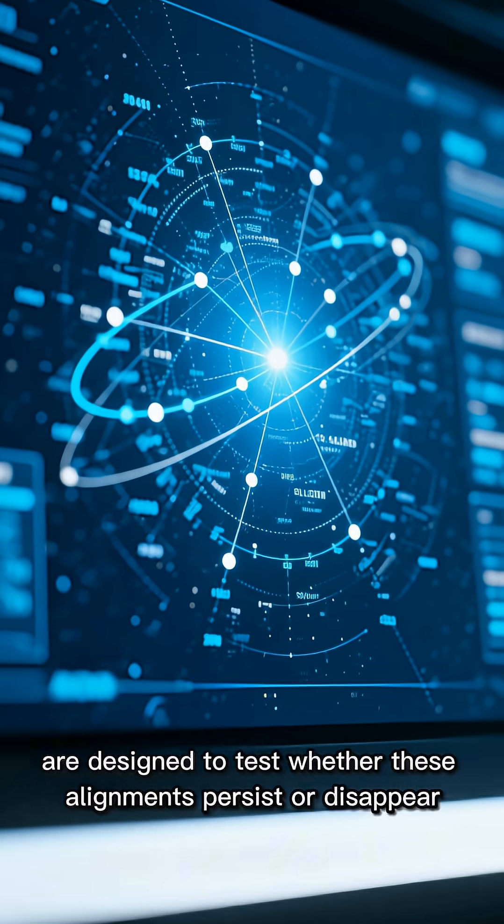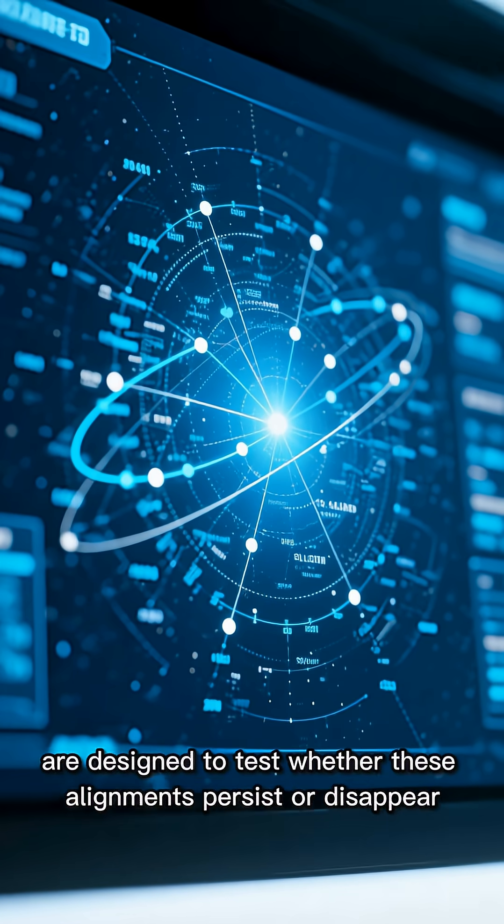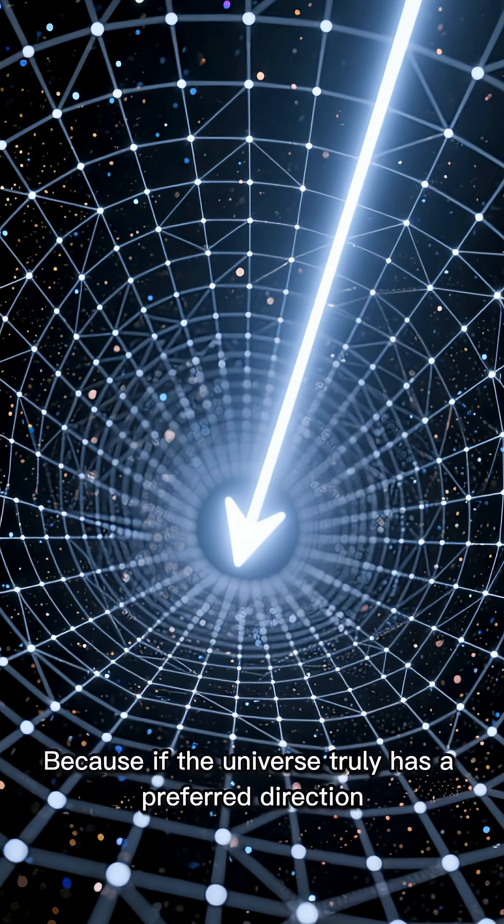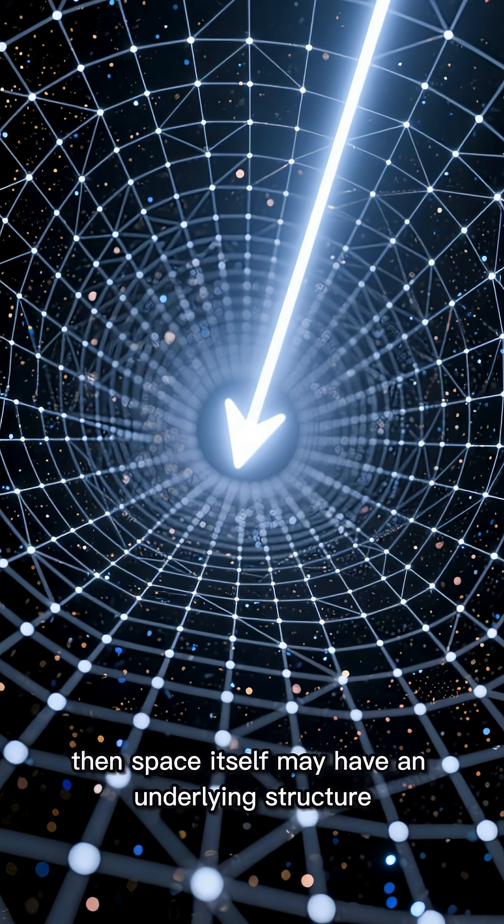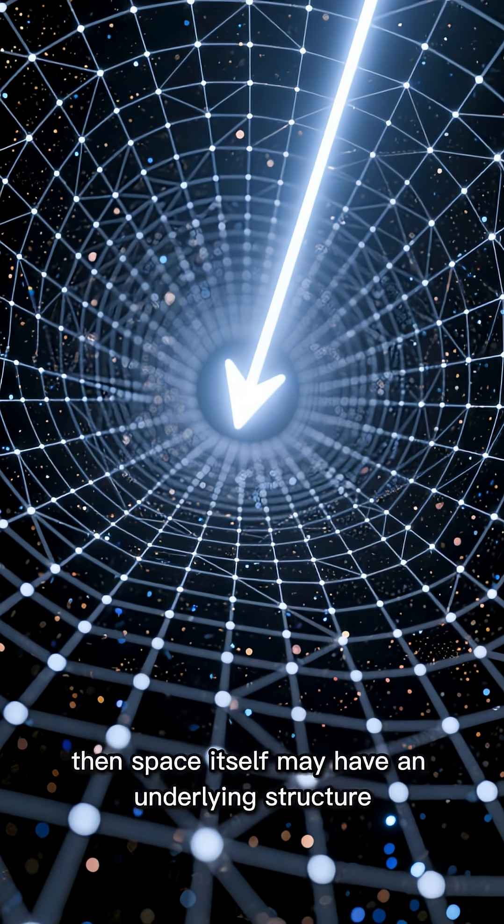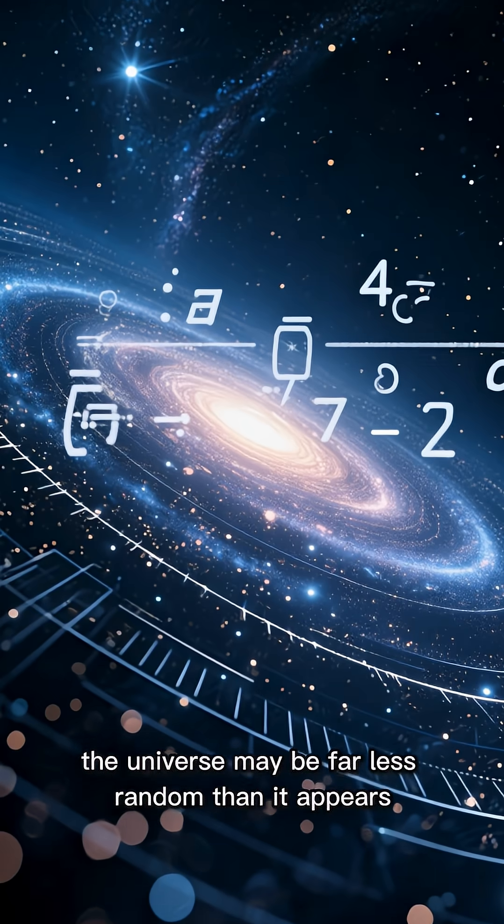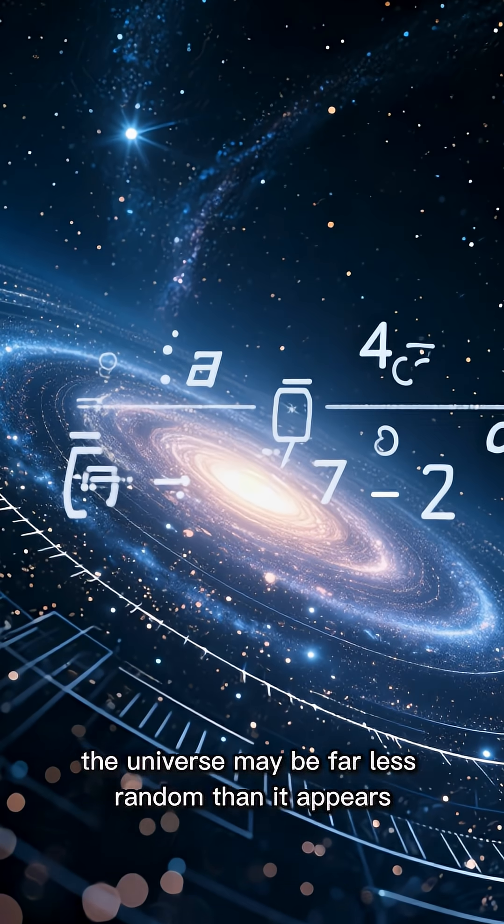are designed to test whether these alignments persist or disappear. Because if the universe truly has a preferred direction, then space itself may have an underlying structure. And if that is true, the universe may be far less random than it appears.